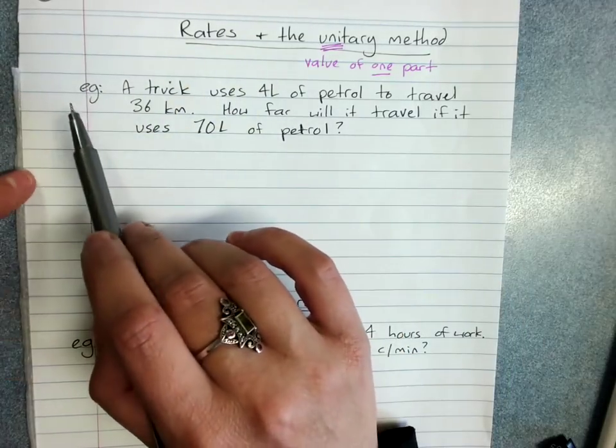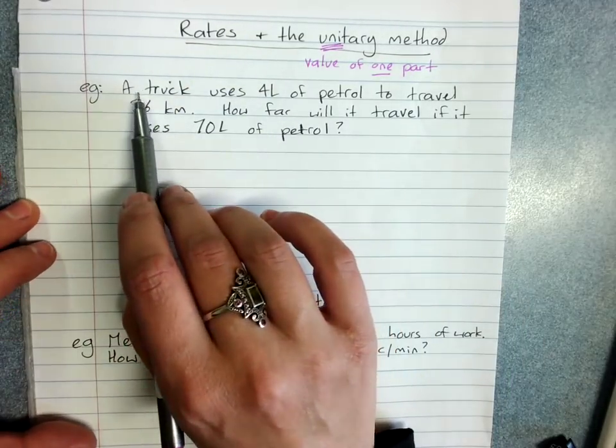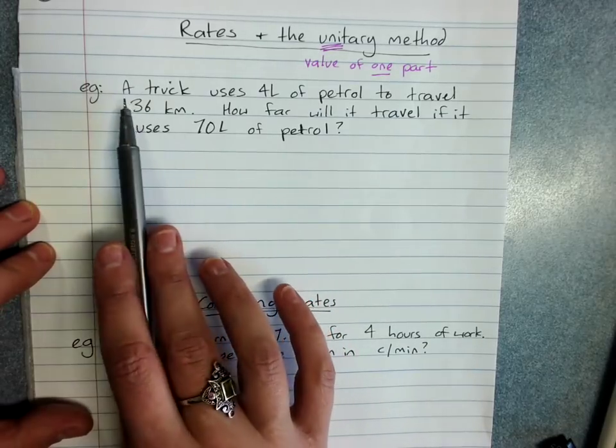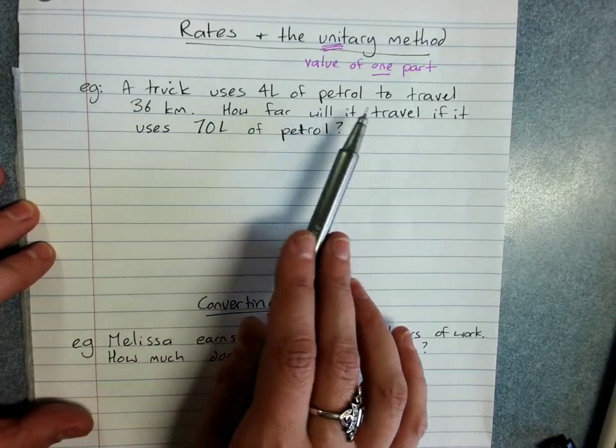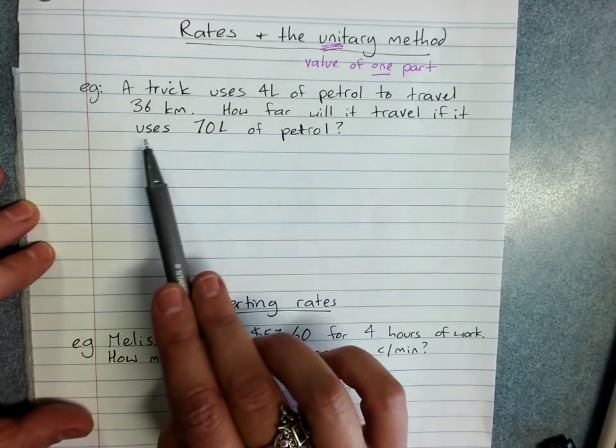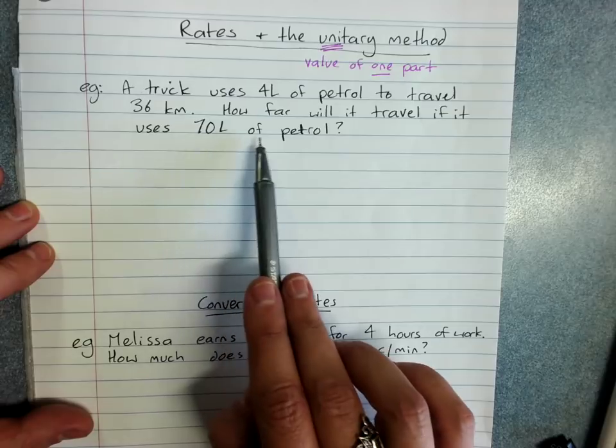This is the unitary method used with rates. So this example has a couple of tricky things which we'll have a look at. A truck uses four liters of petrol to travel 36 kilometers. How far will it travel if it uses 70 liters of petrol?